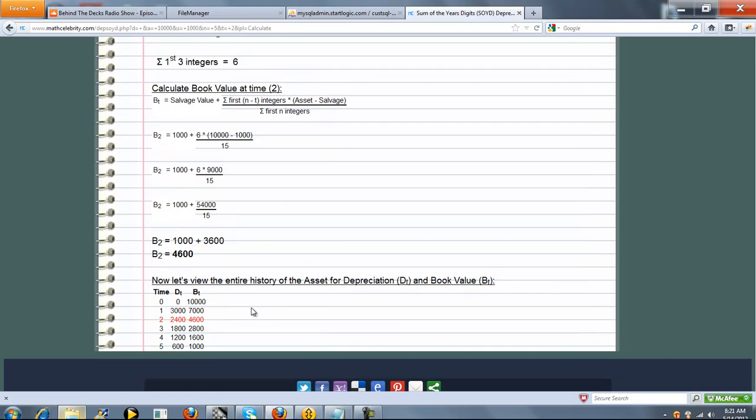One thing we do for each calculation is we view the entire history of the asset with depreciation. You can see from time 0 to time N how the asset depreciates and its new book value. Whatever time you choose, we highlight in red to show you what the values are at that point in time.